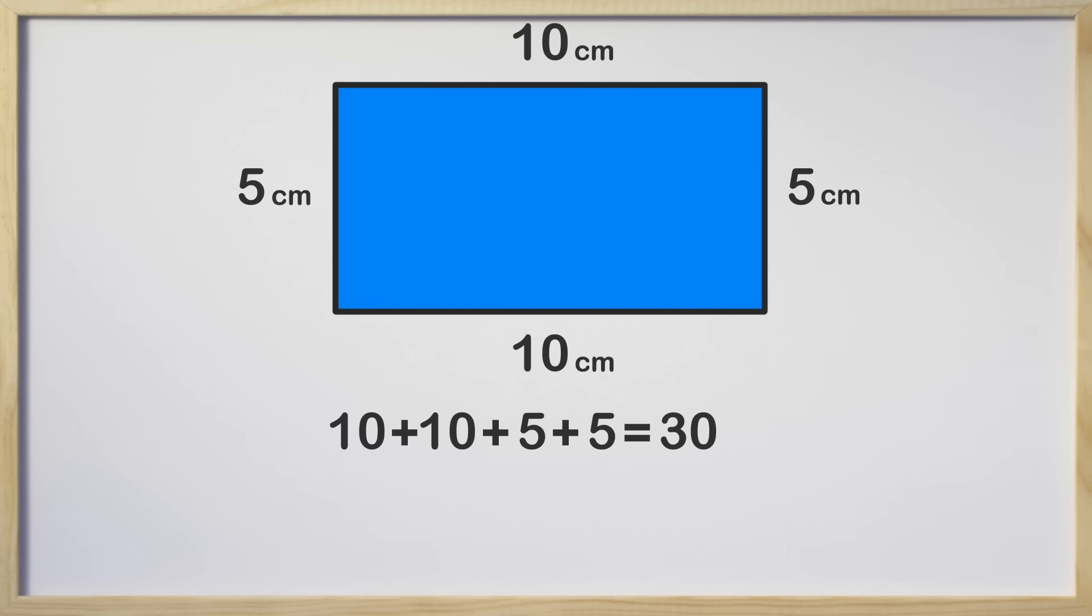The answer is 30 but wait, we are missing something. The perimeter is 30 centimeters. Don't forget that if they give you a unit of measurement you need to keep it in the answer. Great job!